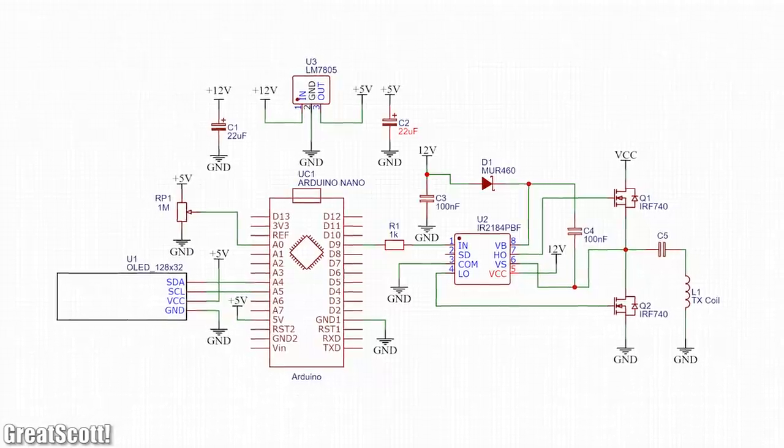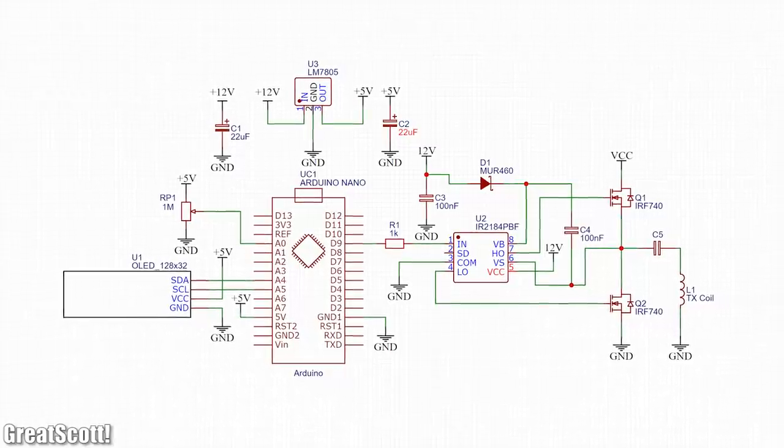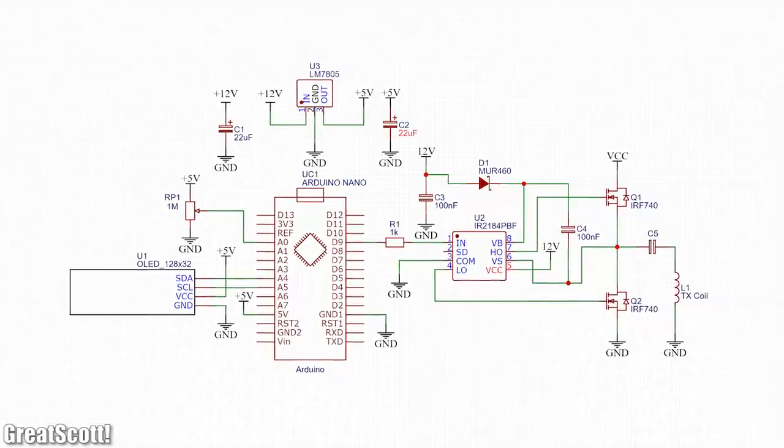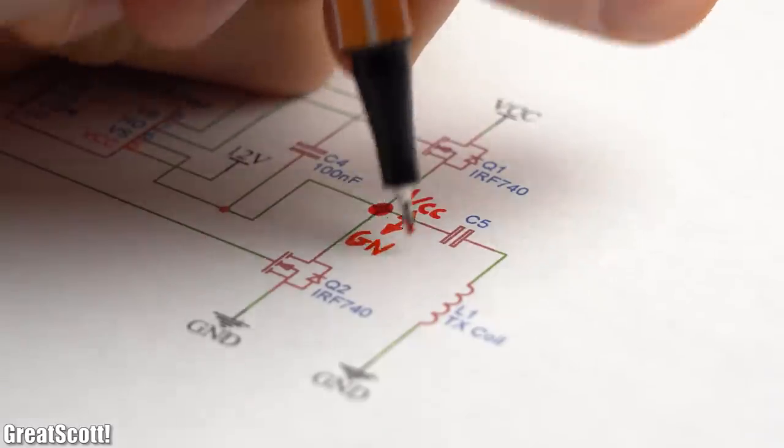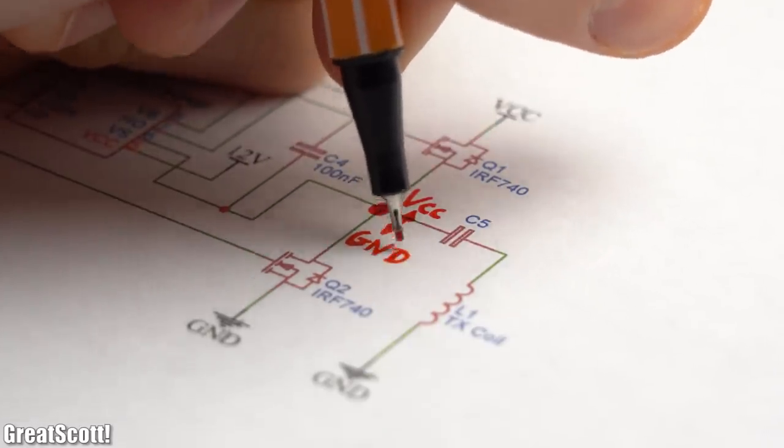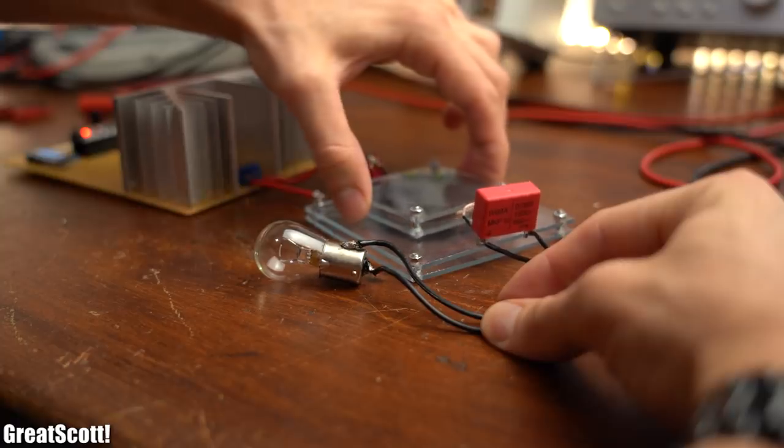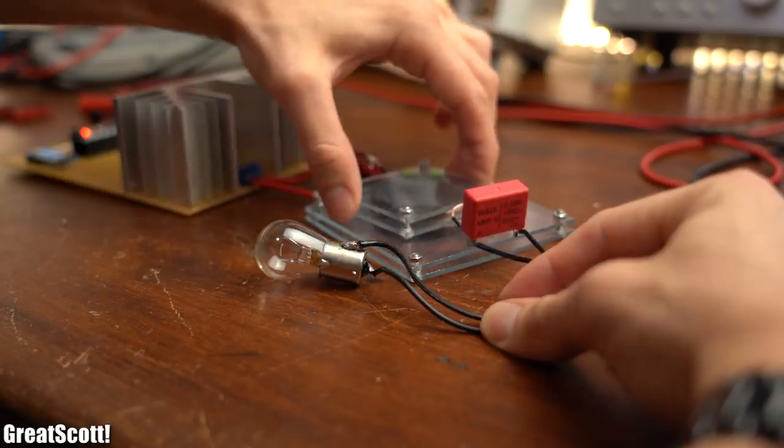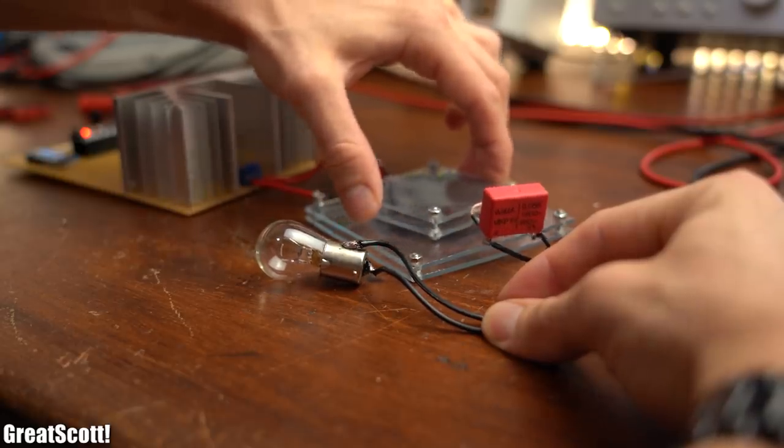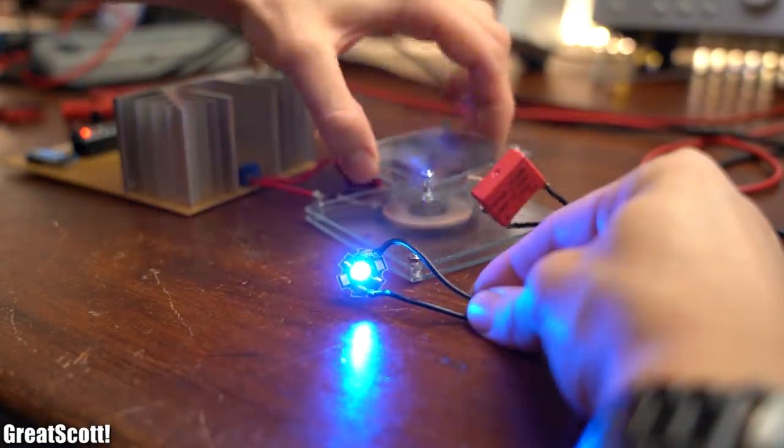That is why I came up with this easier to build one, which comes with a few changes. First off, it is only a half bridge which either connects the coil system to the supply voltage or ground. Thus this new system will not be as powerful as the full bridge inverter, but still good enough for tons of experiments.